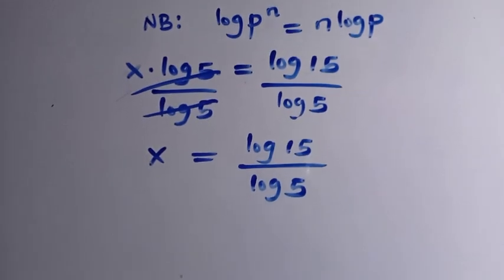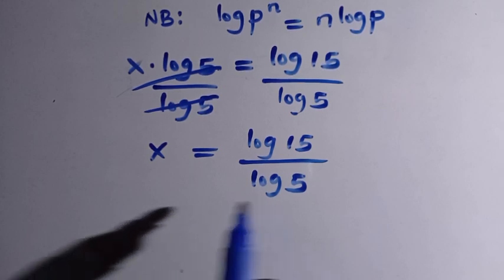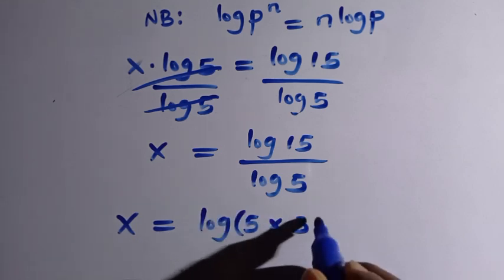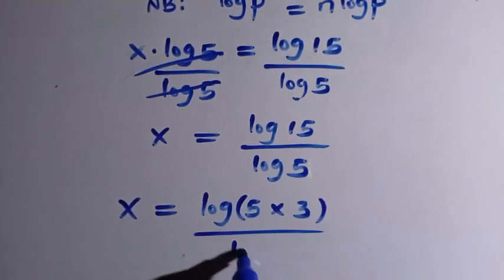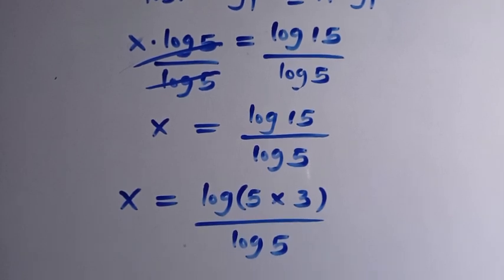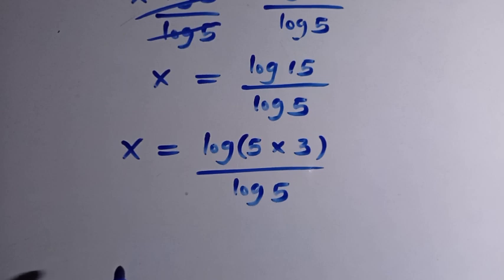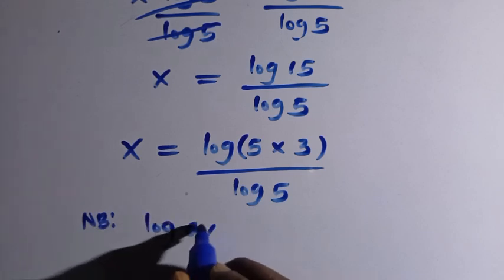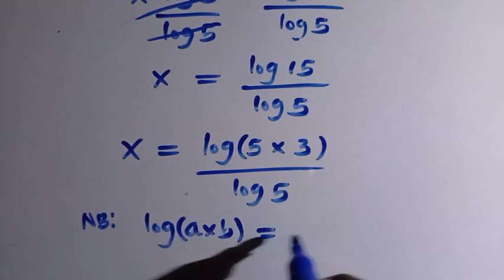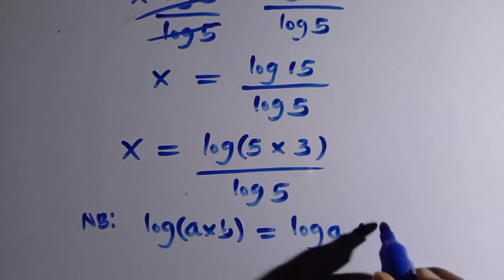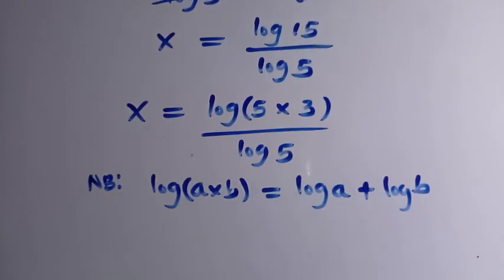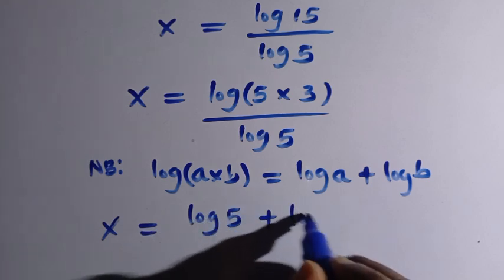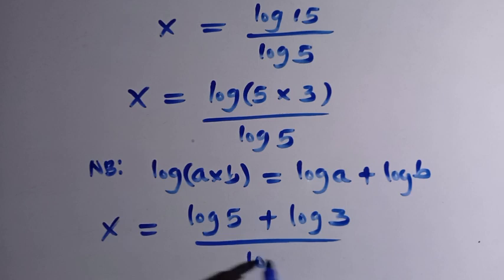Let's try to break this down. We have log 15 over log 5. We can rewrite 15 as log of 5 multiplied by 3, since 5 times 3 is 15, divided by log 5. There is a rule that says: if we have log of a multiplied by b, provided this is multiplication only, this becomes log a plus log b. By applying it, we consider this as log 5 plus log 3, divided by log 5.